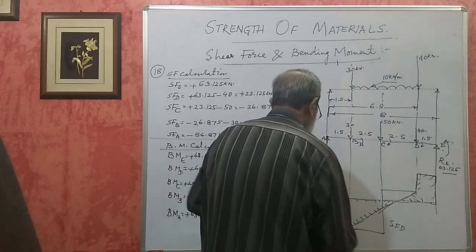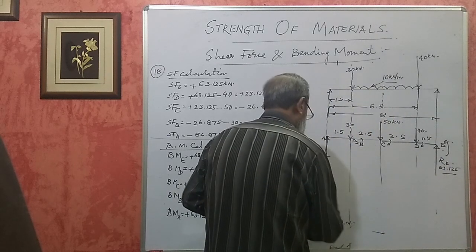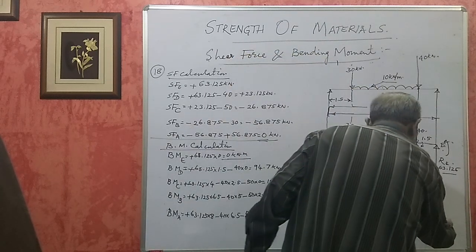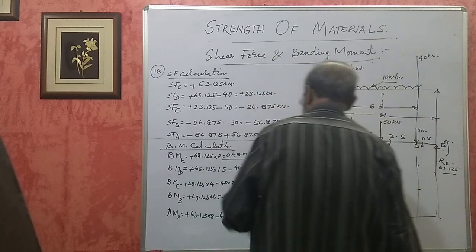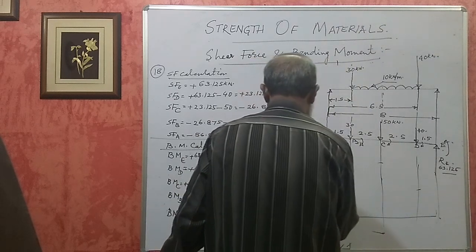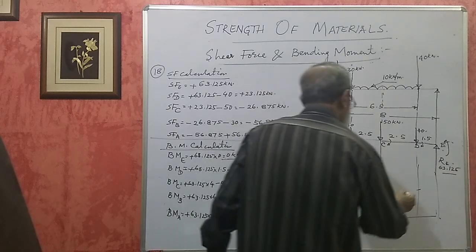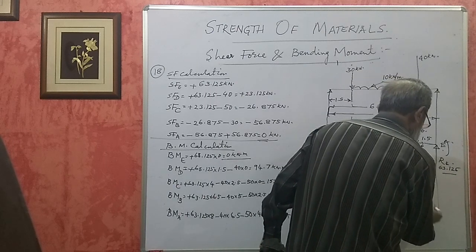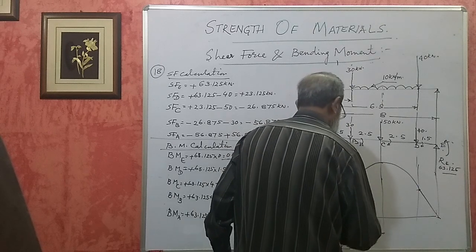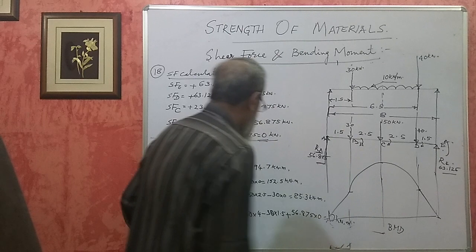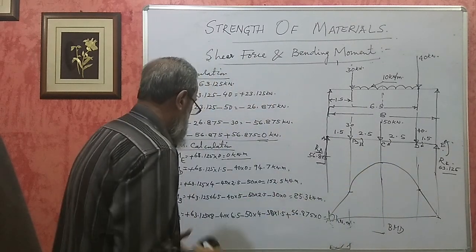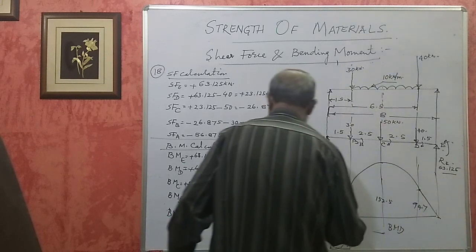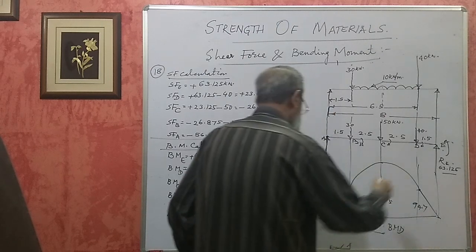For the BMD: it starts at 0 at E, rises to 94.7 at D as a straight line, then curves up to 152.5 at C (curve because of UDL), then comes down as a straight line to 85.3 at B, and returns to 0 at A. Mark these values: 152.5, 94.7, and 85.3 kilonewton meters.